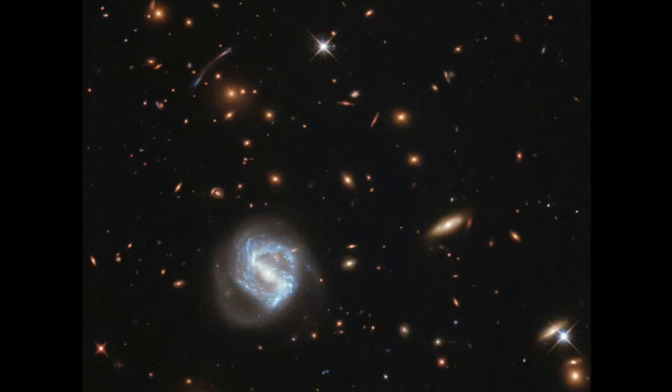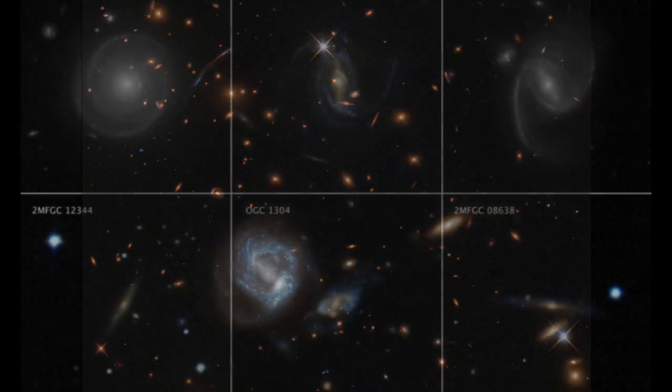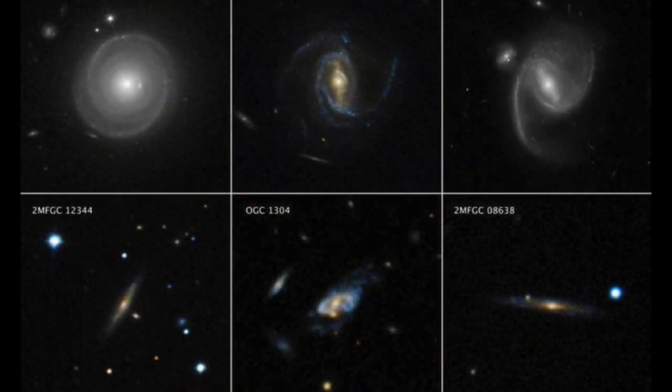But what lay beyond our galaxy? When astronomers aimed their telescopes at seemingly empty parts of the night sky, they saw fuzzy blobs of light that they called nebulae. Some of them had distinctive spiral shapes. But what exactly were these spiral nebulae, and where were they?